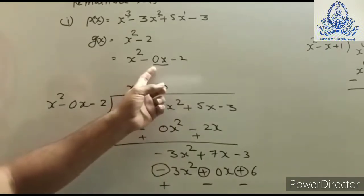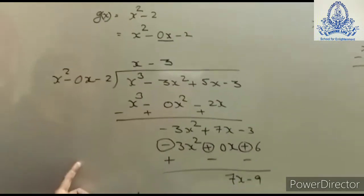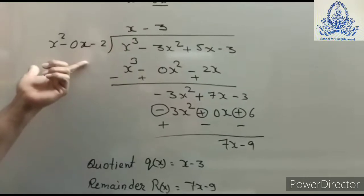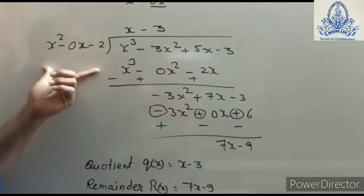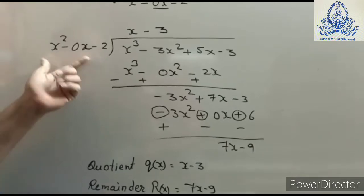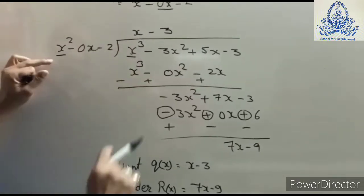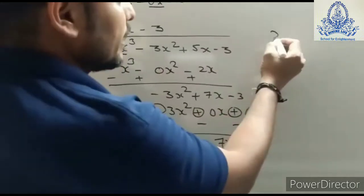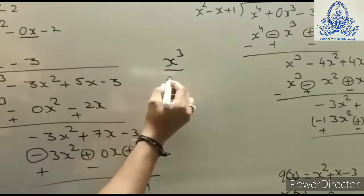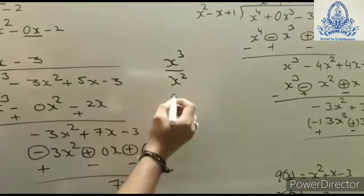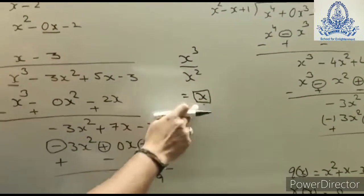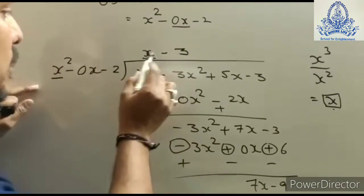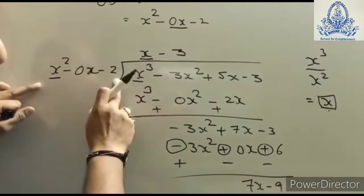We can add any missing term with a 0 coefficient. Next, we use the long division method, which you have already learned in ninth standard. Take the first term of the dividend and divide it by the first term of the divisor. The result, x, is the first term of the quotient.